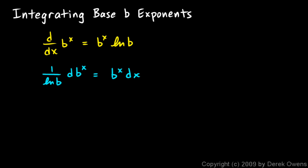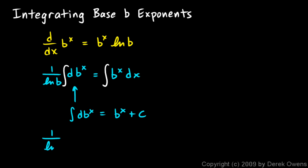That is just the equation algebraically rearranged. Now I'm going to integrate both sides. Since 1 over ln(b) is just a constant, I put the integral on the left side, and on the right side I have the integral of b^x dx. The integral of the differential of b^x is just b^x plus c. So the left side becomes 1 over ln(b) times b^x plus c, and on the right I have the integral of b^x dx.